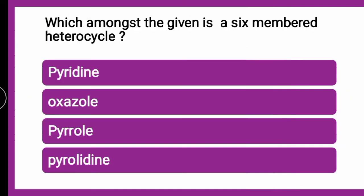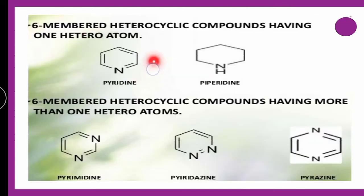Next question: which amongst the given is a 6-membered heterocycle — whether pyridine, oxazole, pyrrole, or pyrrolidine? The correct answer is pyridine. Pyridine is a 6-membered heterocycle containing nitrogen as the heteroatom and is an unsaturated 6-membered heterocyclic compound.